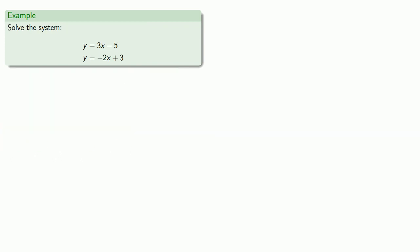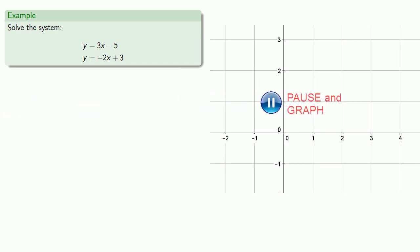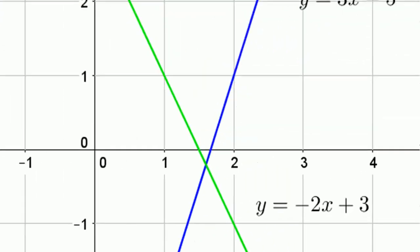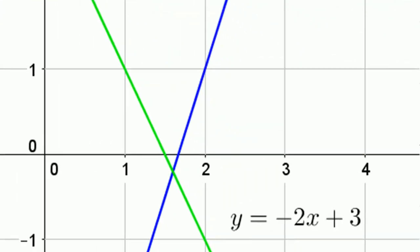And we can solve any system of equations this way. So if I want to solve the system of equations, I can try graphing both equations. Then find the coordinates of the intersection point, which are very clearly something more than 1 but less than 2 and something a little less than 0.